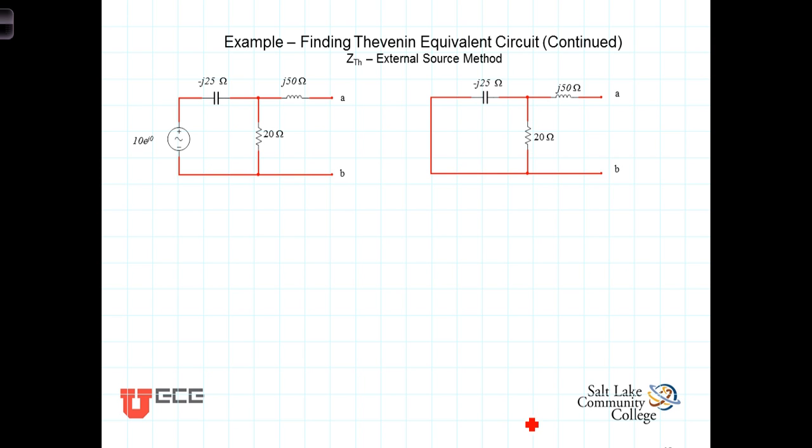Our third and final method for finding the Thevenin equivalent impedance involves applying an external source to the terminals of our circuit after deactivating any independent sources. This circuit that we're finding the Thevenin circuit for has a single independent voltage source.